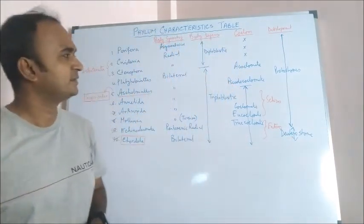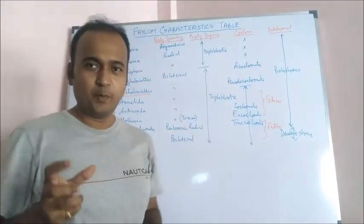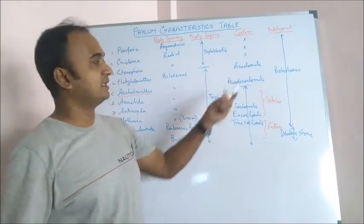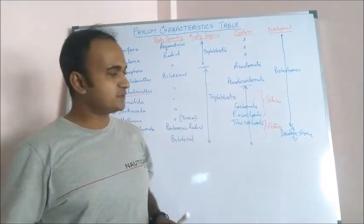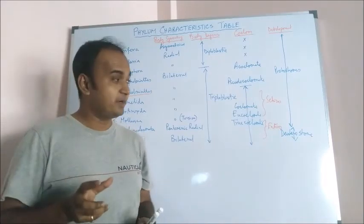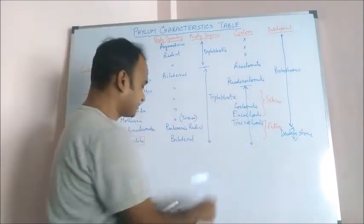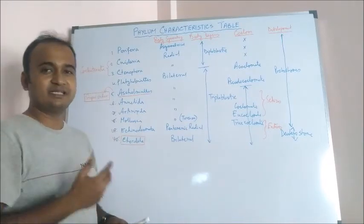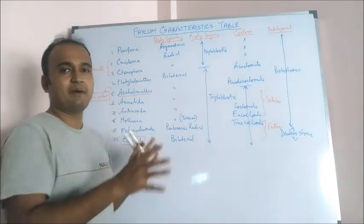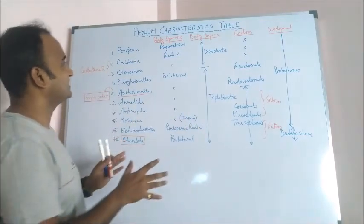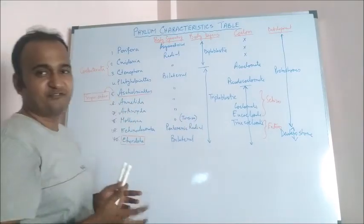Why? When blastopore is modified into mouth, that is called protostomes. And when blastopore in adult is developed into anus, they are called deuterostomes. So Echinodermata and Chordata, these two are deuterostomes. This is all about general characteristics of different phyla.